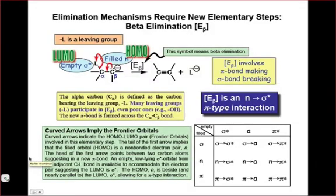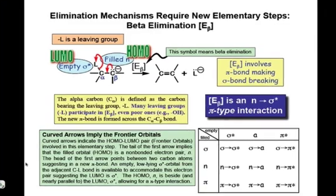The second elementary step I'm going to discuss in this webcast is the beta elimination, or E_β step. This involves the formation of a pi bond from an anion with loss of an anionic leaving group, similar to what you're used to seeing for substitution reactions.